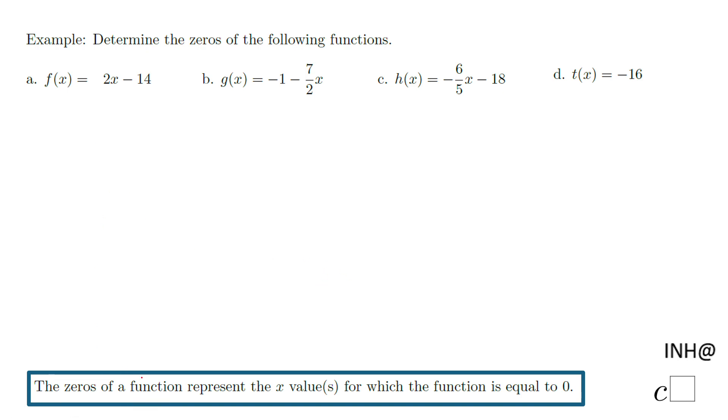And you notice down here I said the zero of a function represents the x value or values for which the function is equal to zero. So let's start with the first one which we have which is f of x. The function needs to be equal to zero so we're going to replace f of x with zero.